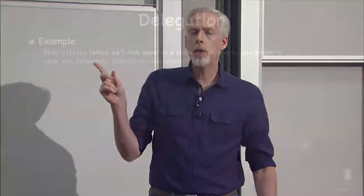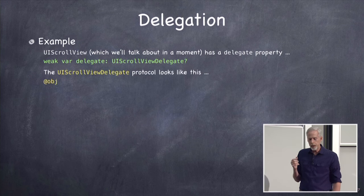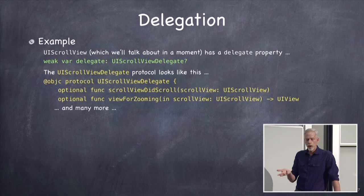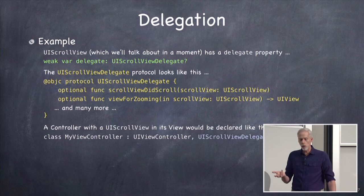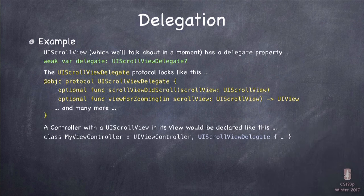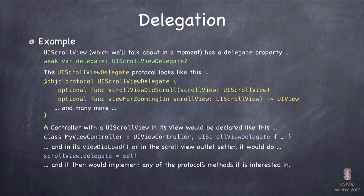Let's look at what this looks like code-wise for scroll view. ScrollView has a var called 'delegate' of type UIScrollViewDelegate, optional because it's weak. The UIScrollViewDelegate protocol has optional functions like 'scrollViewDidScroll' and 'viewForZooming(in:)'. The controller says it implements UIScrollViewDelegate, and in viewDidLoad says 'scrollView.delegate = self'. Then it implements whichever methods it wants. We'll see this in the demo today as well.